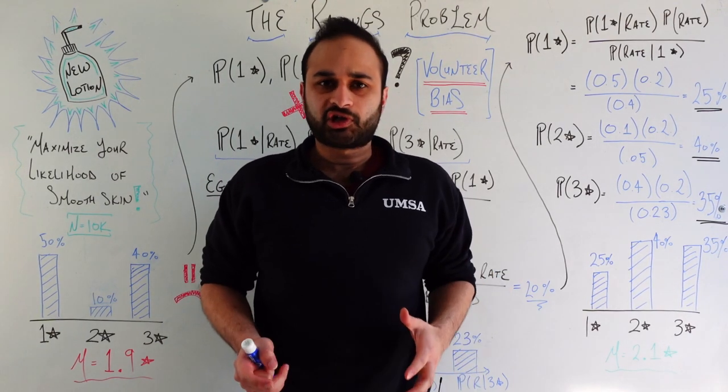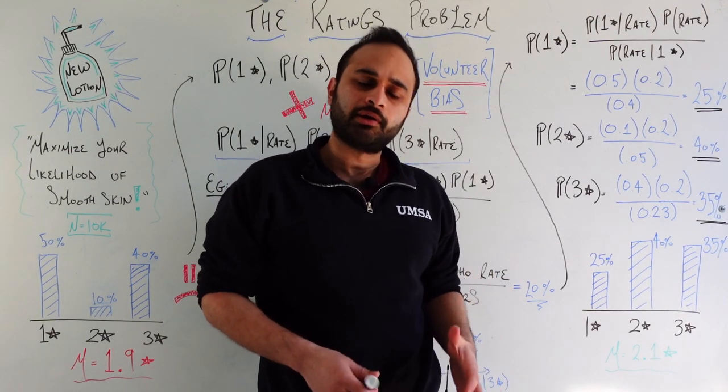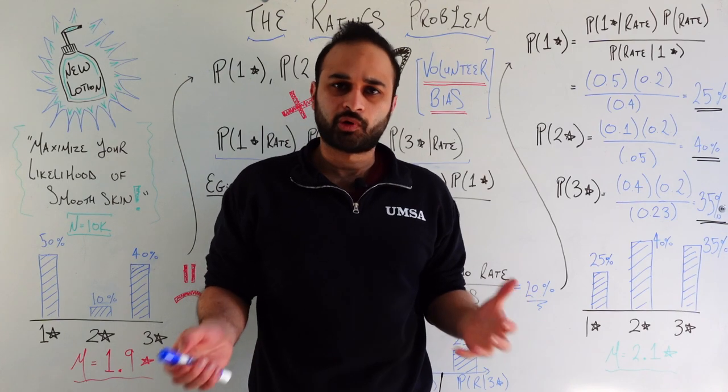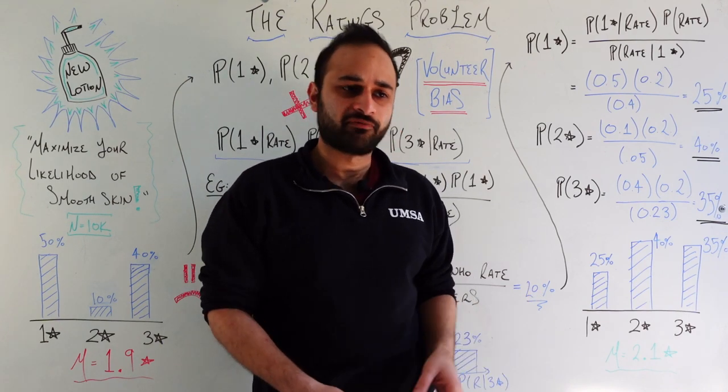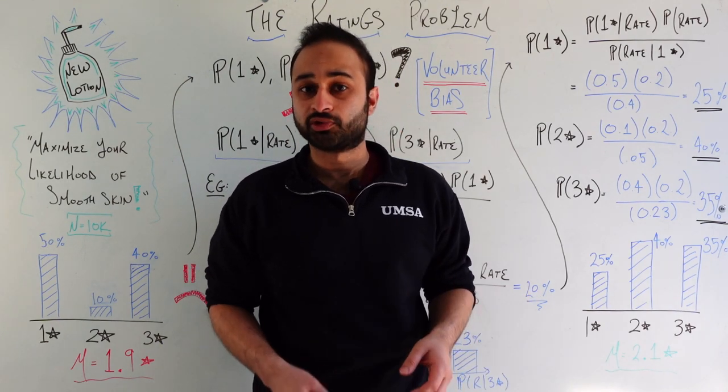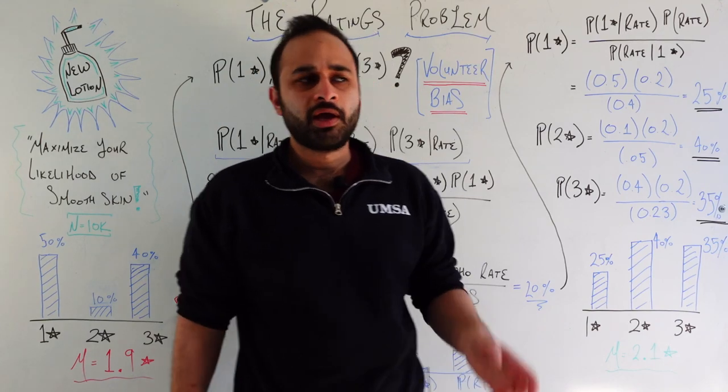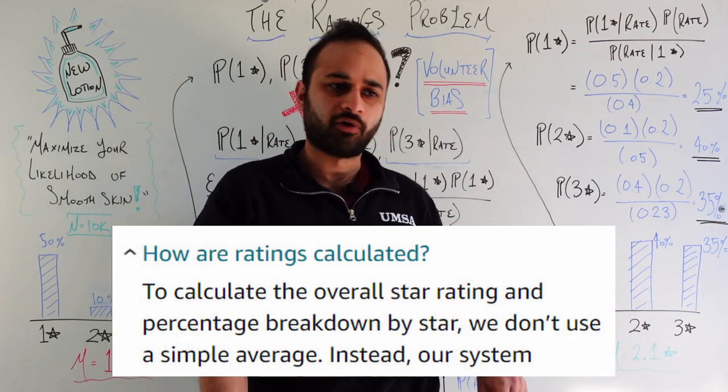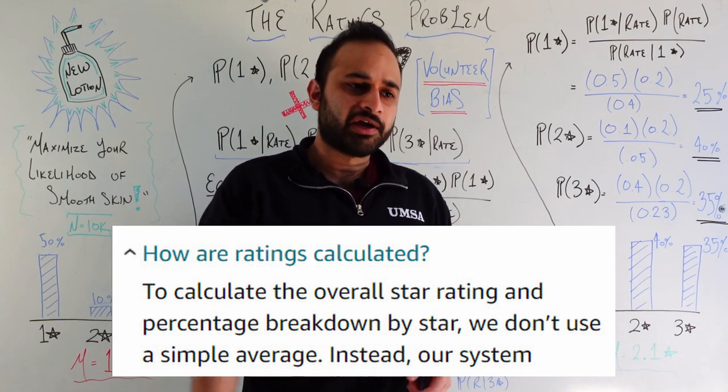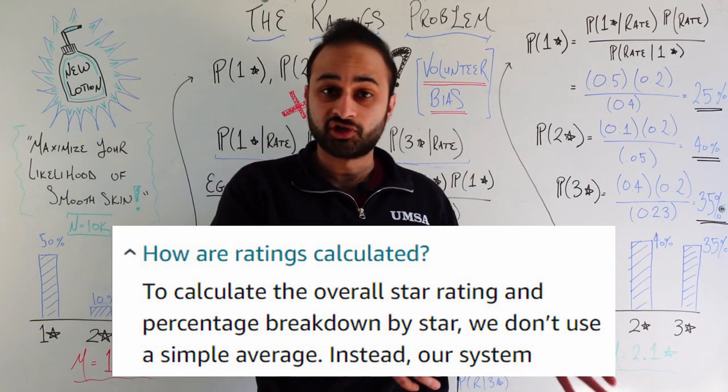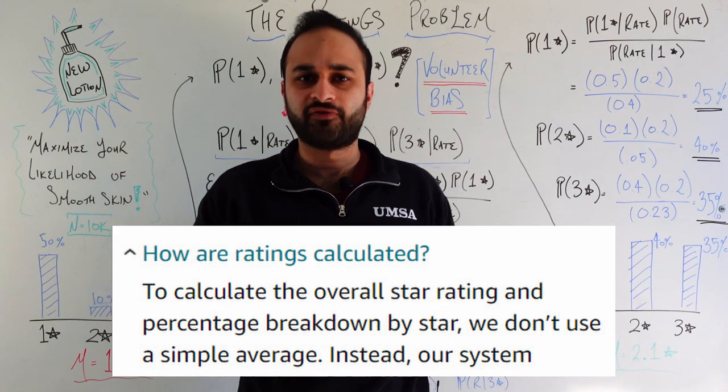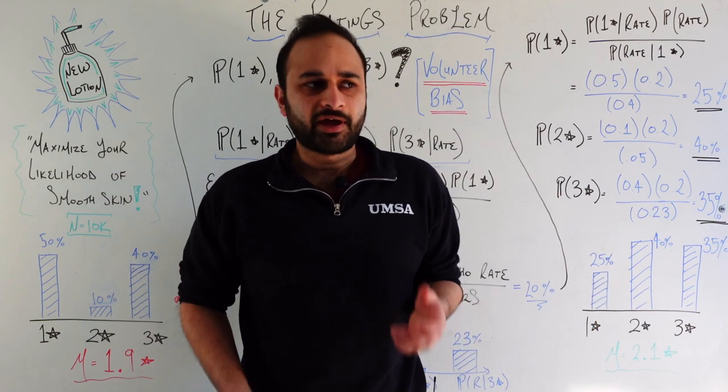Hey everyone, welcome back. So recently I was trying to buy a new coffee maker on Amazon. I went down to the ratings to see if the distribution of stars looked like this was a good or bad product. And I noticed this little tiny note that I hadn't really noticed before. It said something along the lines of, this is not just a simple average of the ratings, we do something a little bit more sophisticated behind the scenes. And that really got me thinking.